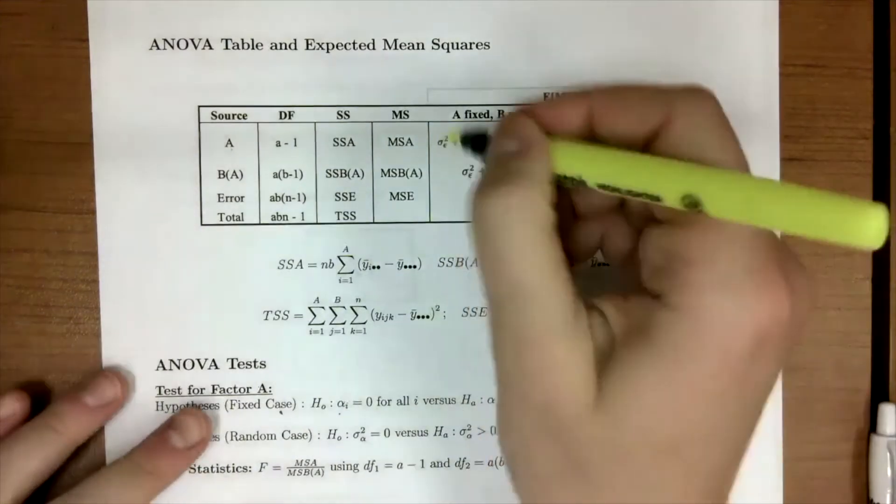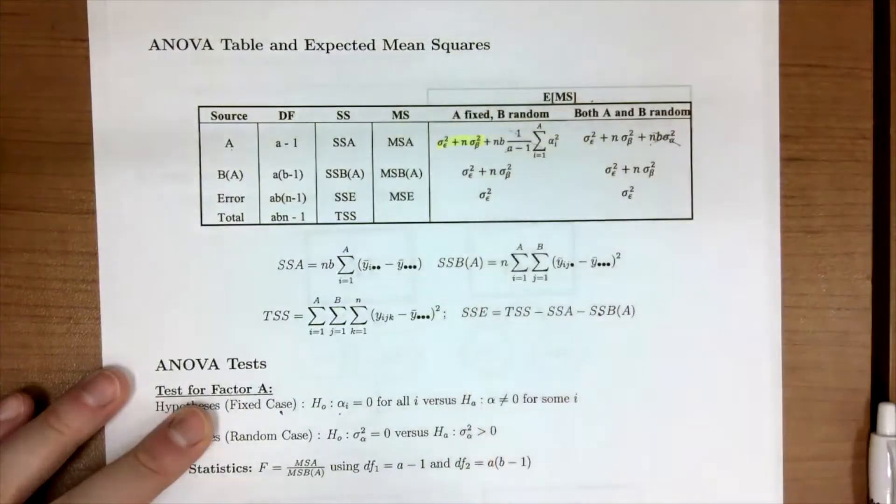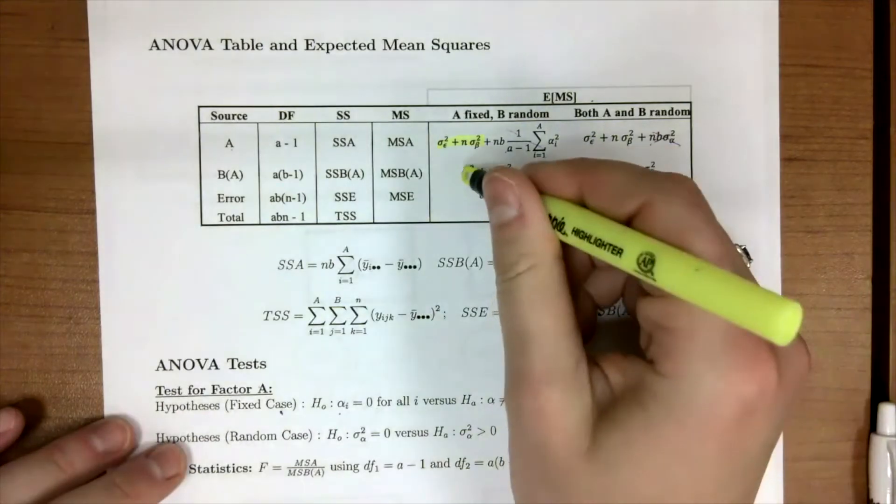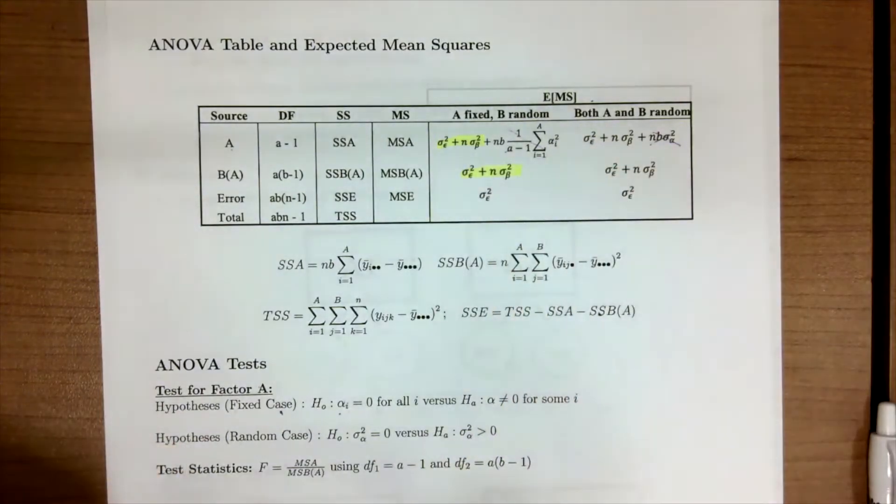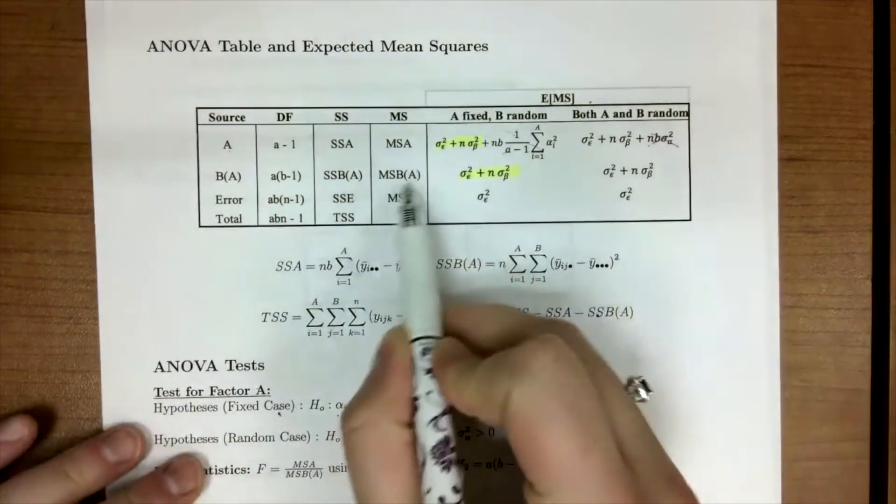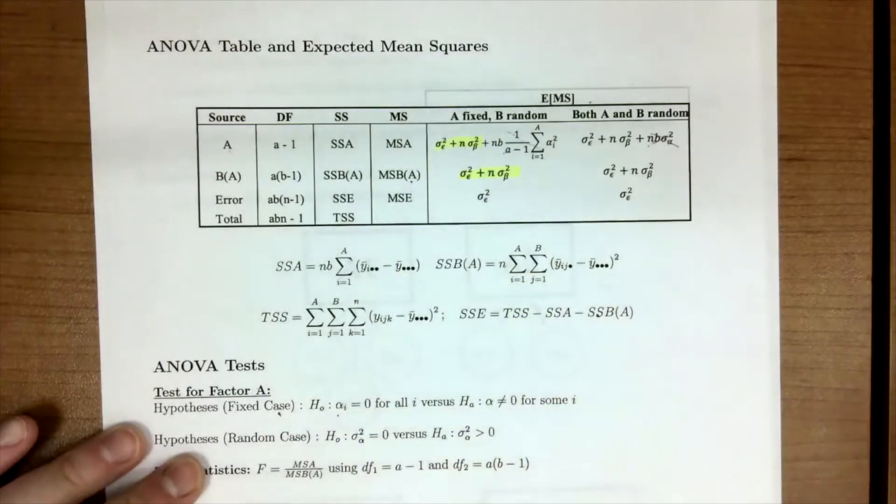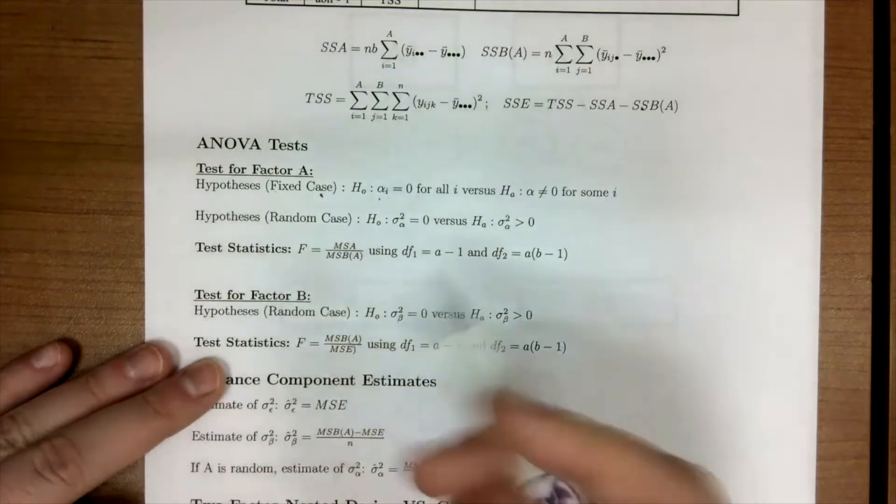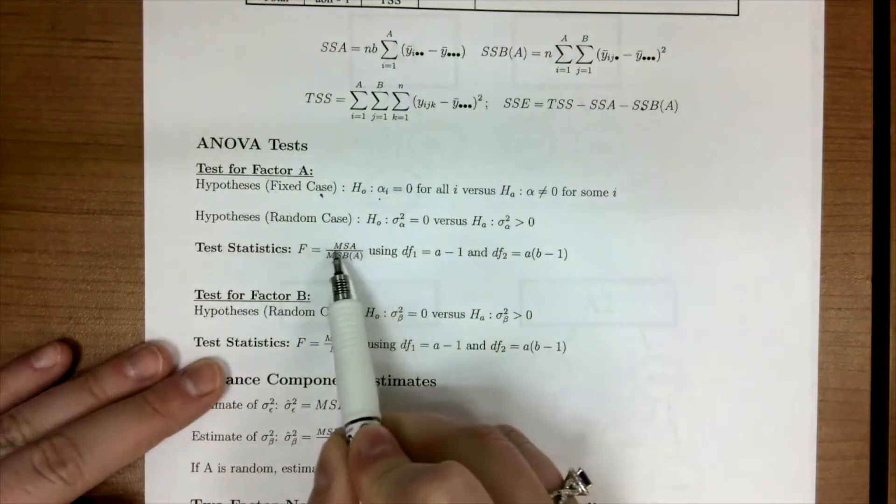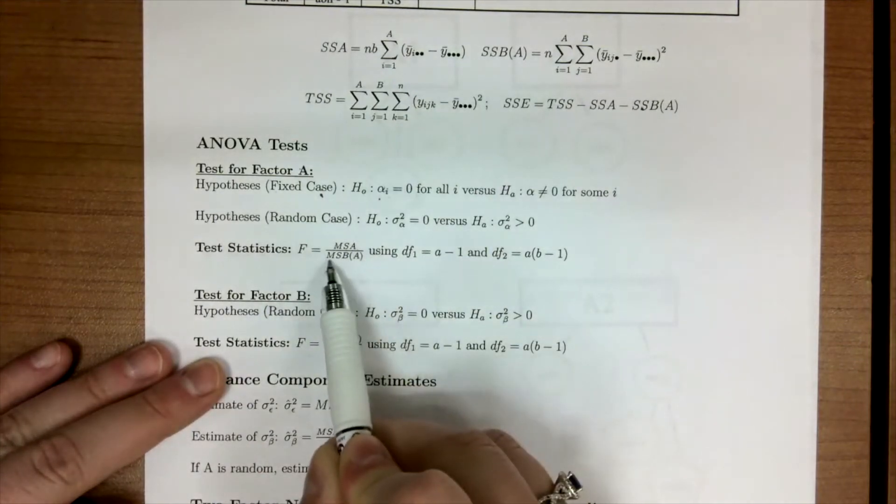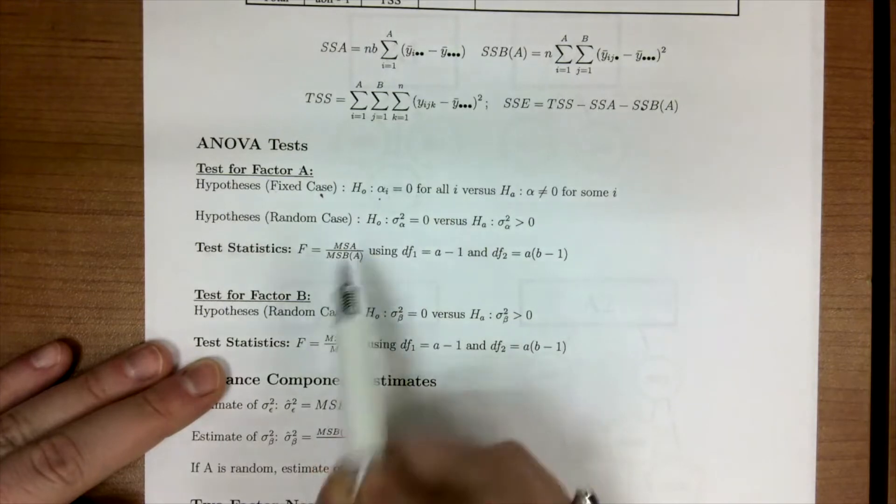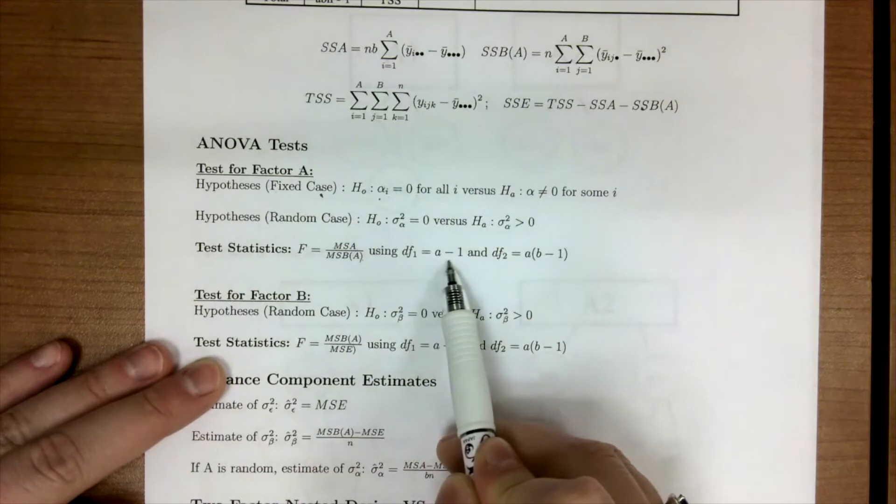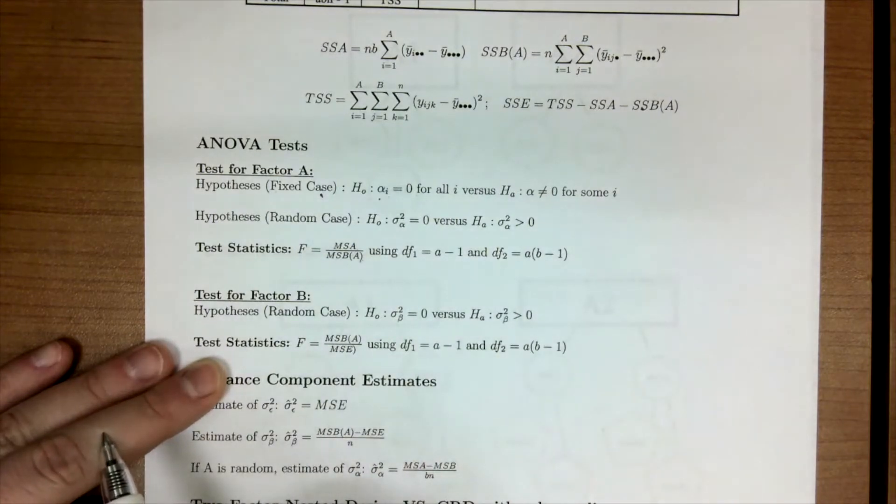And we would be left with this number here, which we can tell is going to be the same as the expected means of B(A). So what this tells us is that our F test for testing our main effect or factor A is going to be MSA divided by MSB(A) with the degrees of freedom related to those.